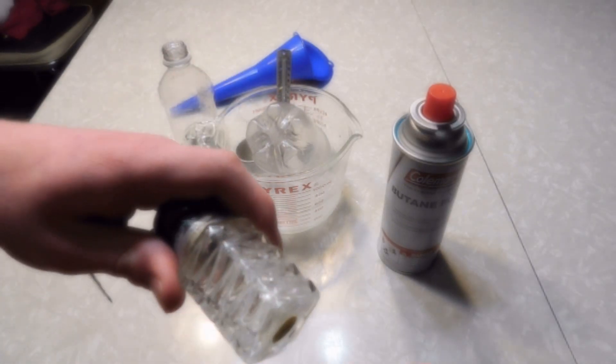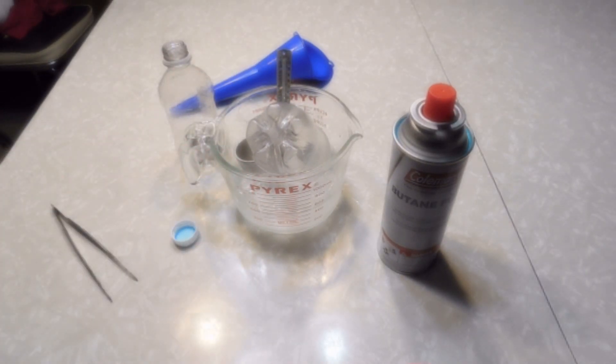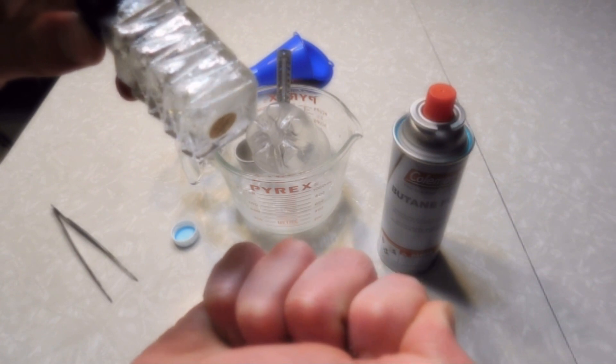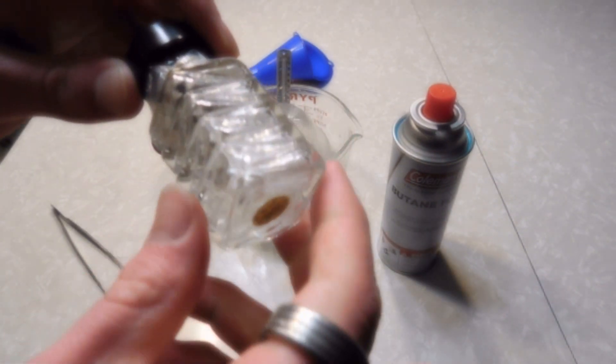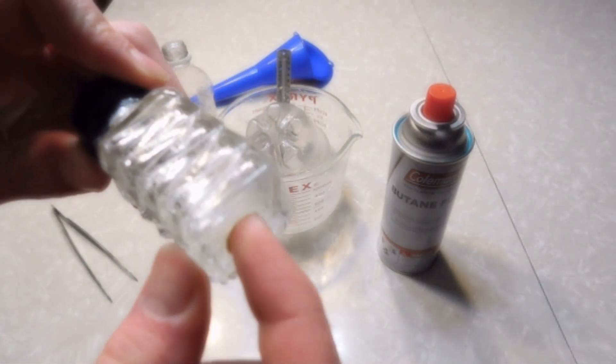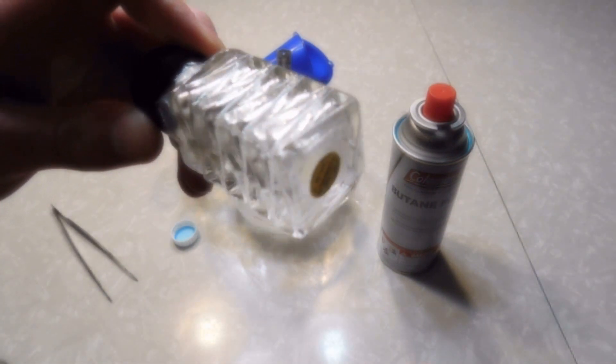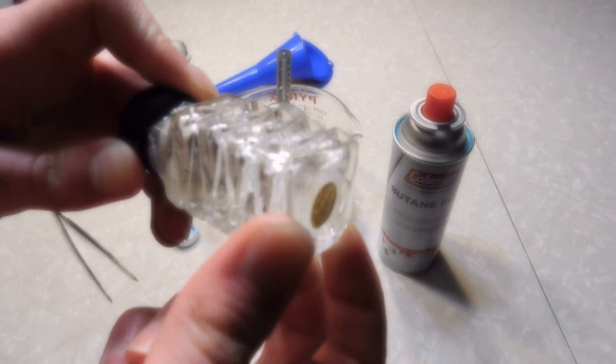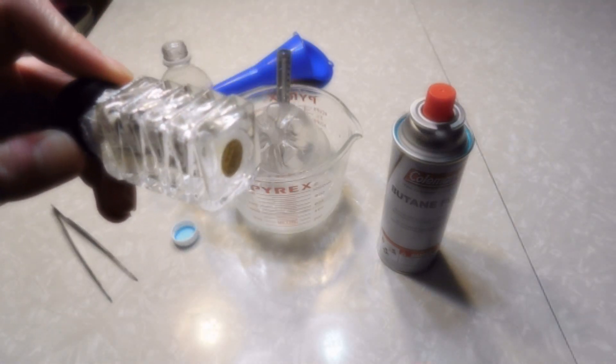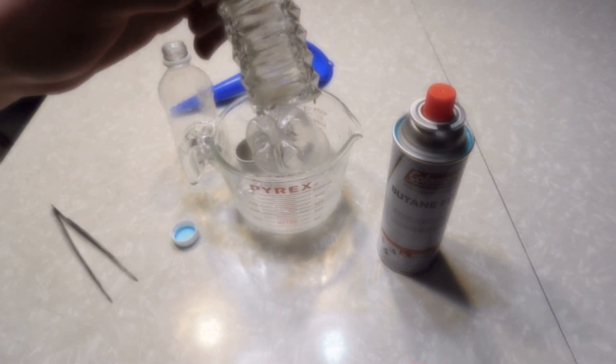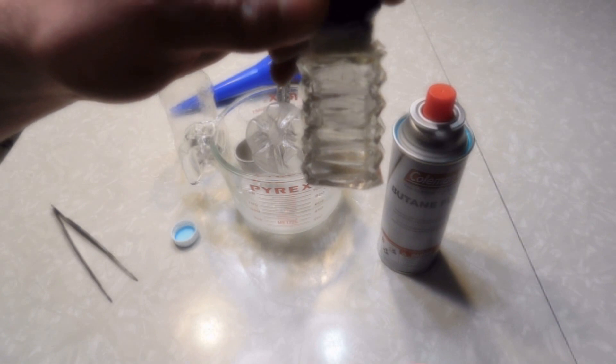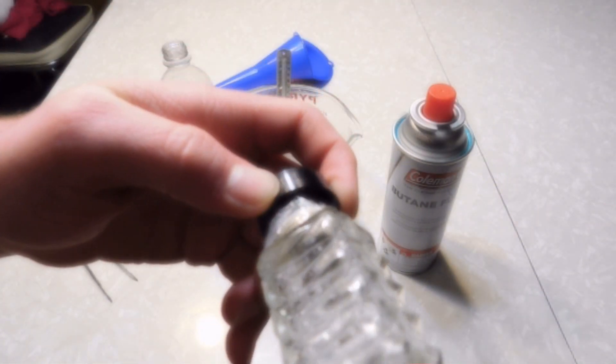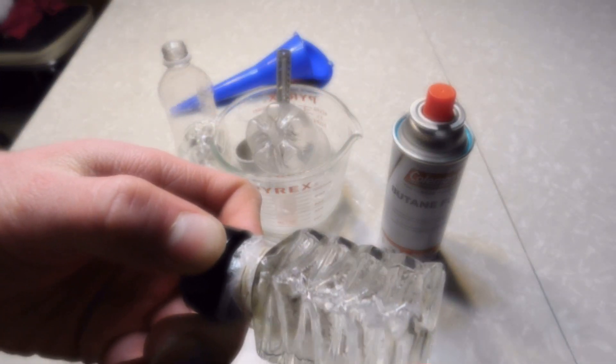Once you put the liquid butane in there and screw on the lid, it will start to boil as the temperature increases. But since there's nowhere for the gas to go, the pressure increases in the container. As the pressure increases, the boiling point of the liquid butane increases until its boiling point hits room temperature from its own pressure, which means that you can store it like this.